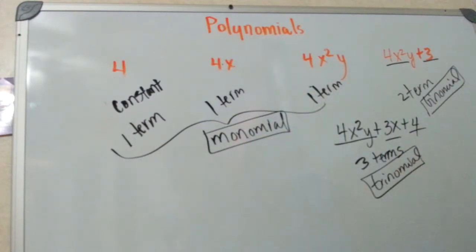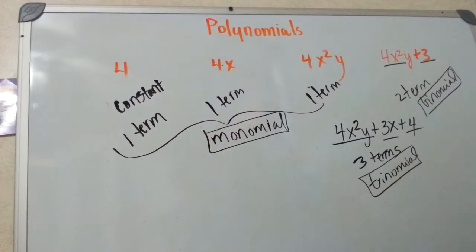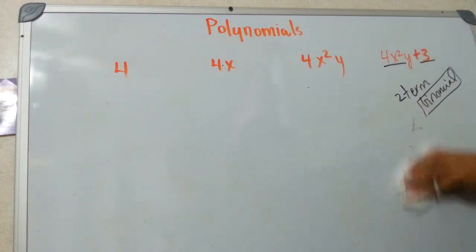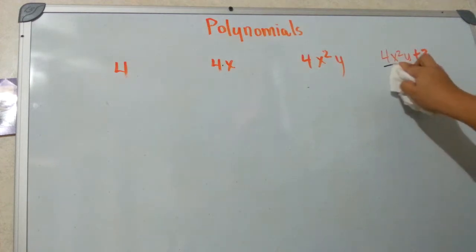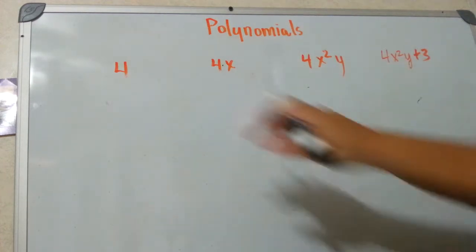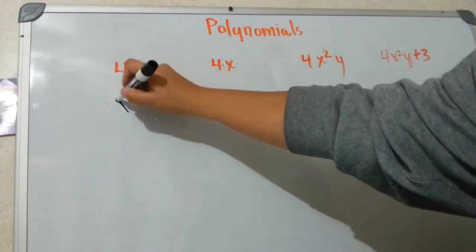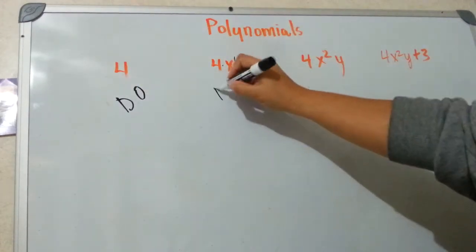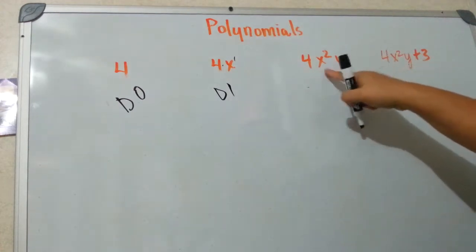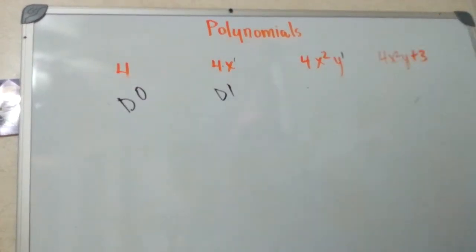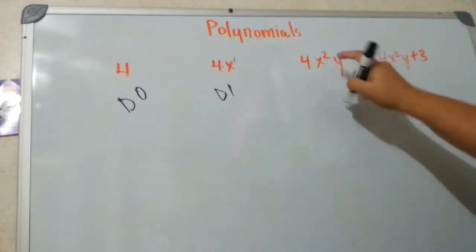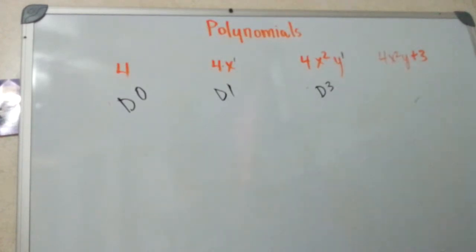Students get that confused with the classifications we give polynomials based on degree. Degree is the exponent level that a polynomial has. This one has no exponent, so the degree would be zero. This one has an exponent of one, so it would be degree one. This one has two variables, each with an exponent — one has an exponent of two, the other of one. You add those and get that this is a degree three polynomial.